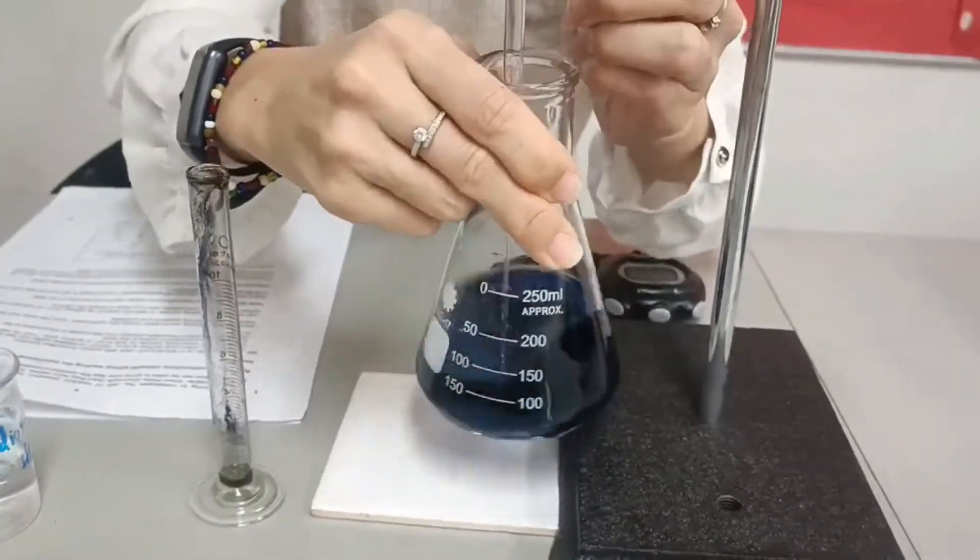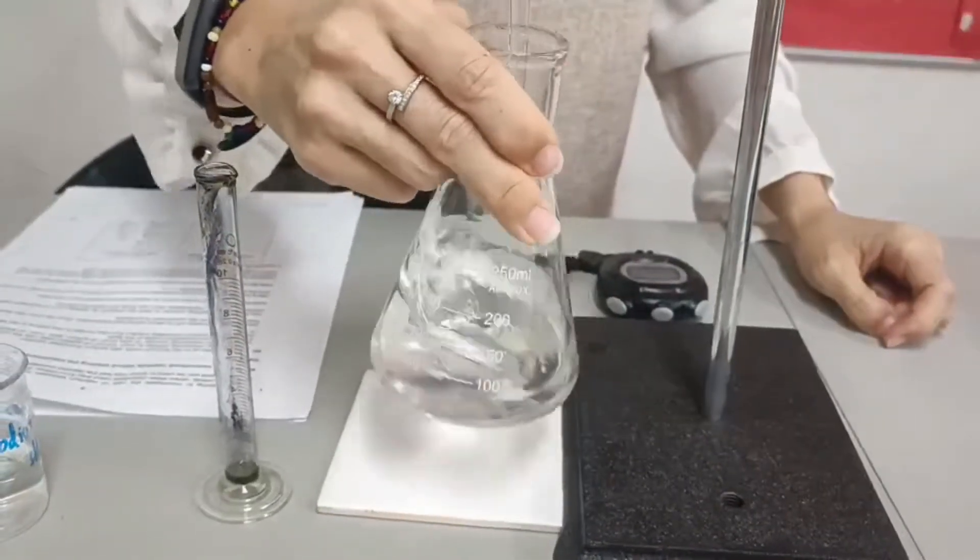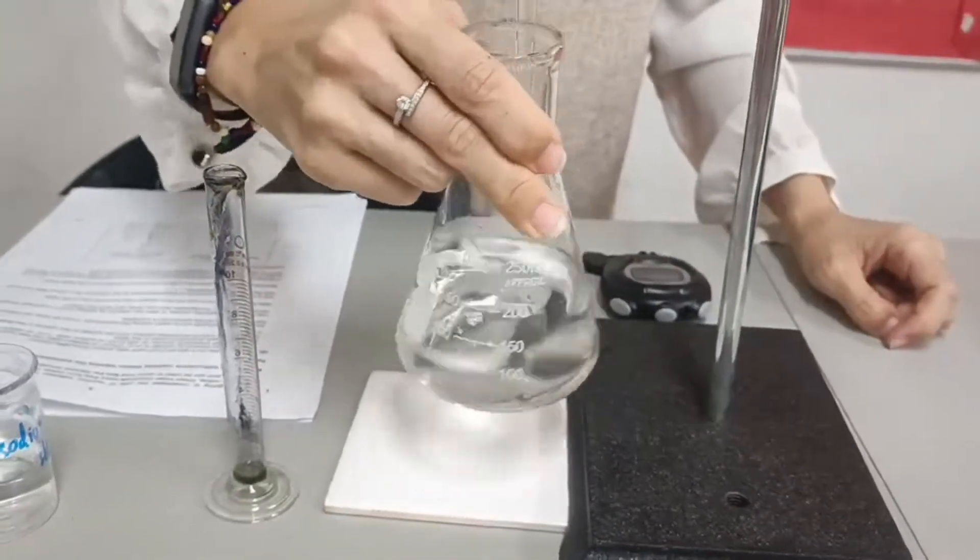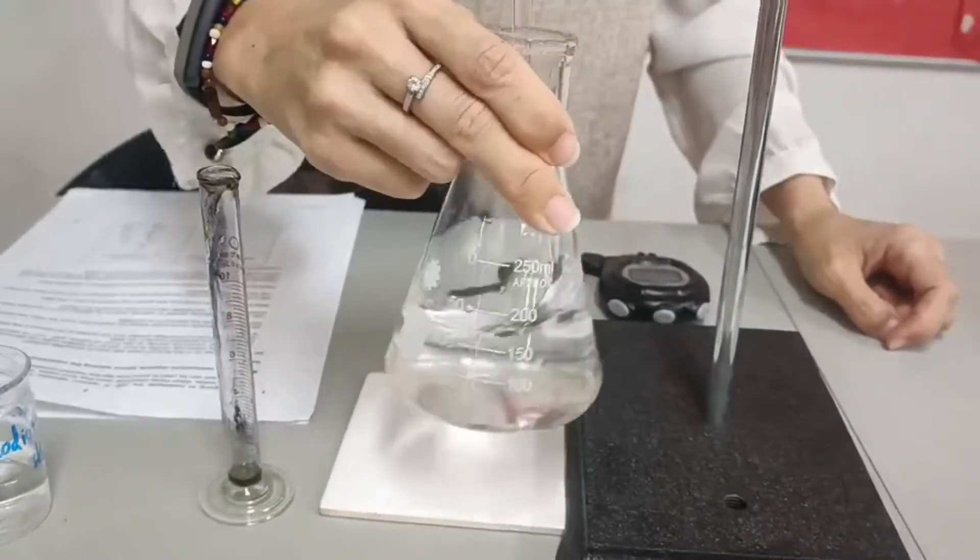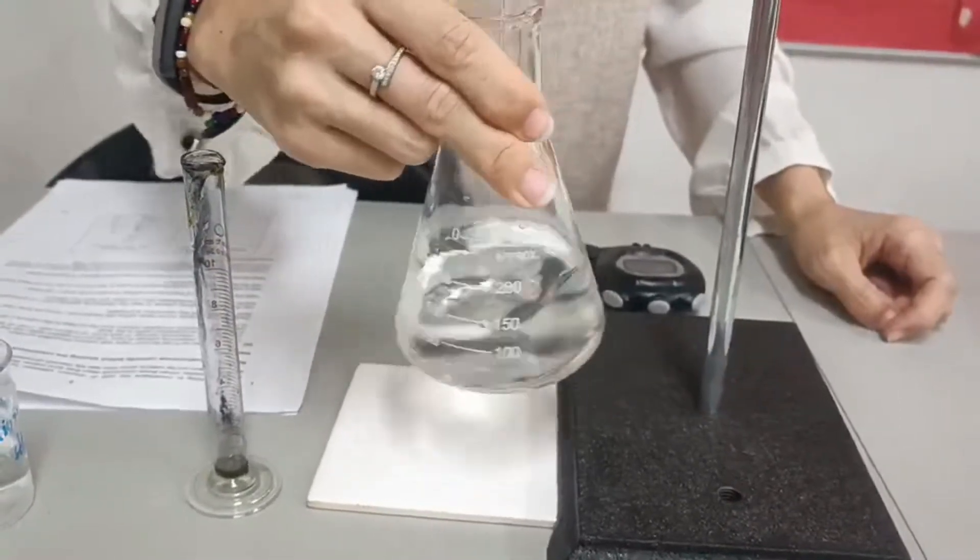Another 0.5 ml. You should be writing all the time when it turns to blue. Write them down in your table.